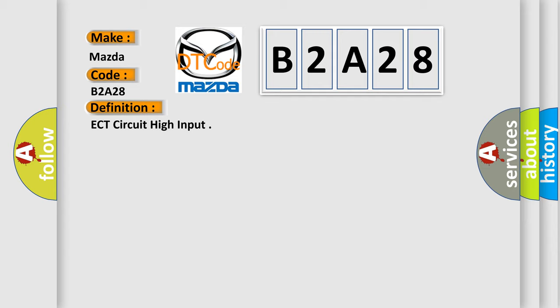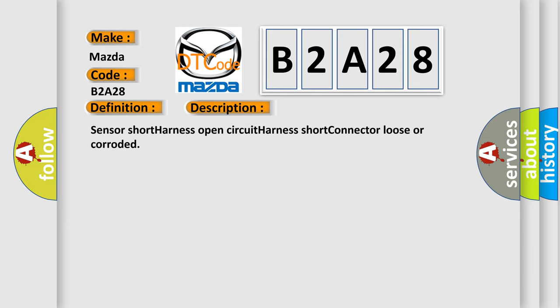And now this is a short description of this DTC code: Sensor short, harness open circuit, harness short, connector loose or corroded.